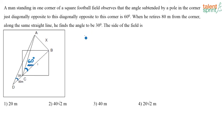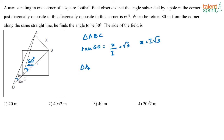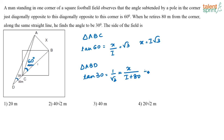Consider triangle ABC: tan 60 equals x by i, which is √3, so x equals i√3. Now consider triangle ABD: tan 30 equals 1/√3 equals x divided by (i + 80). Substituting x equals i√3 into this equation: 1/√3 equals i√3 divided by (i + 80), which gives 2i equals 80, so i equals 40.